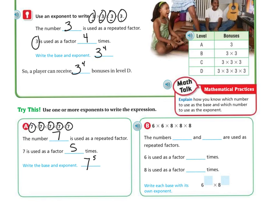Now this one has 6 times 6 times 8 times 8 times 8. So the numbers 6 and 8 are both being repeated. Six is repeated 2 times and 8 is repeated 3 times, so it's going to be 6 to the 2nd power times 8 to the 3rd power.